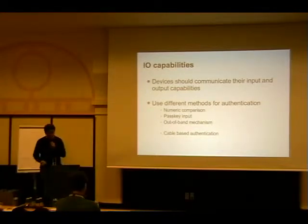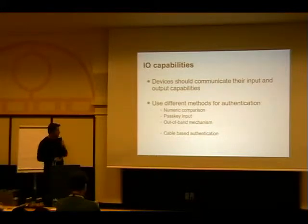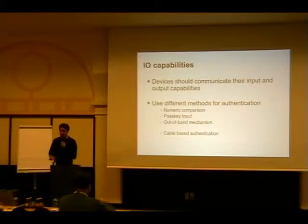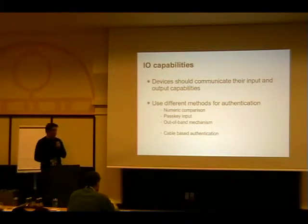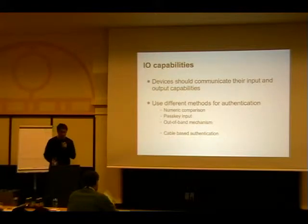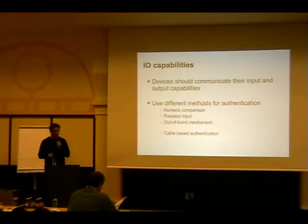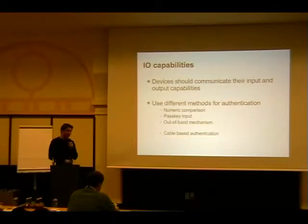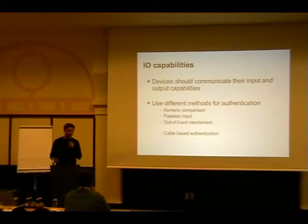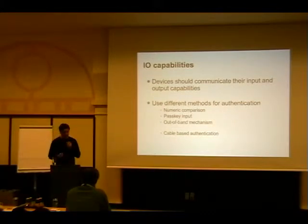Based on these IO capabilities, they pick a different algorithm. The first is numeric comparison: both sides display a number and you compare them and say yes, they match. The second is passkey input like before — one side asks you for a passkey and you input it. There are two variations: both sides enter the same pin code, or one side displays a pin code and you type it on the other — which is nice, for example, pairing a keyboard to a computer.